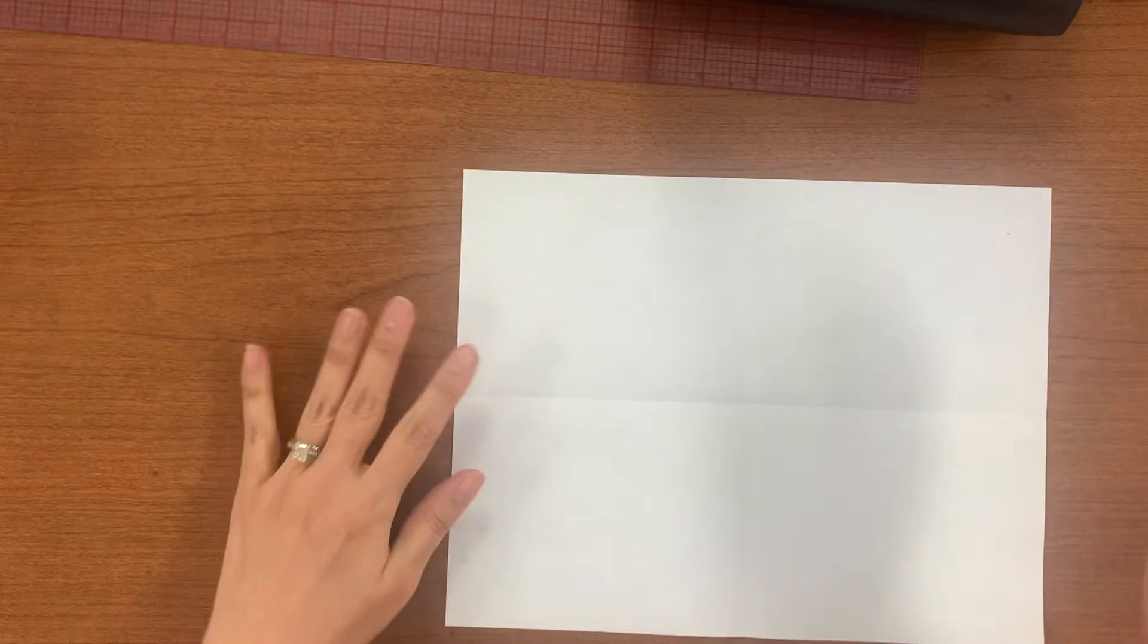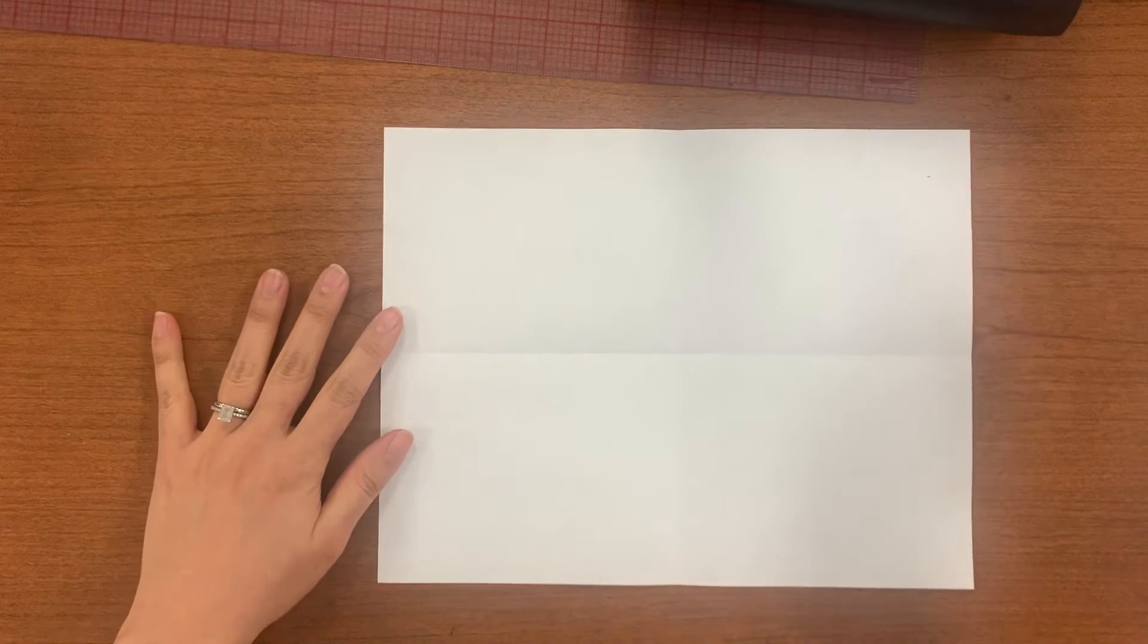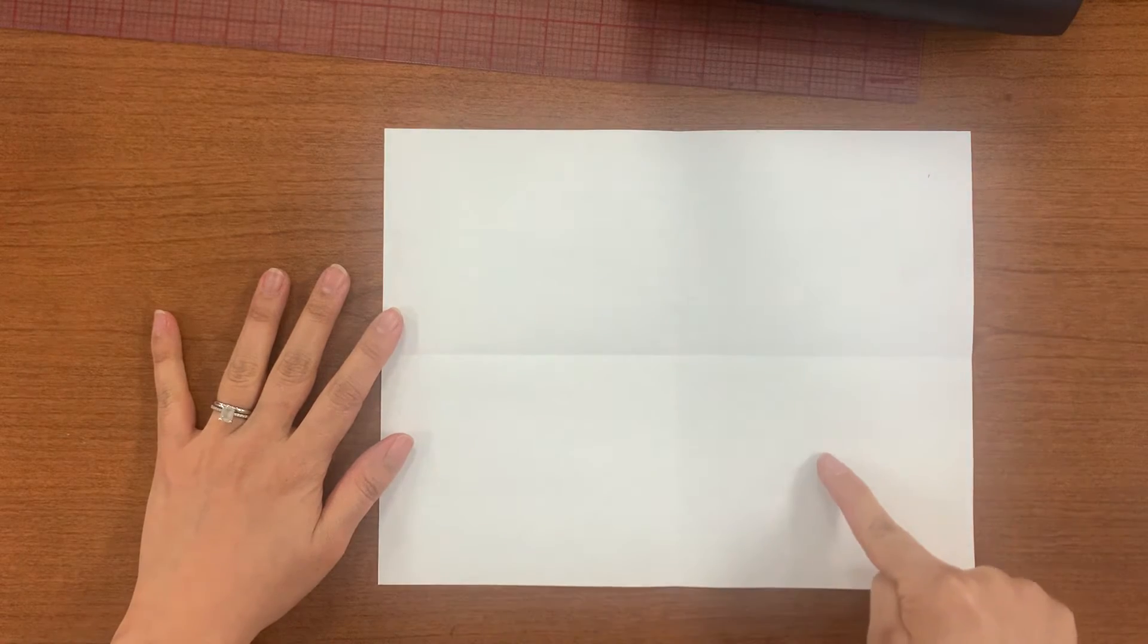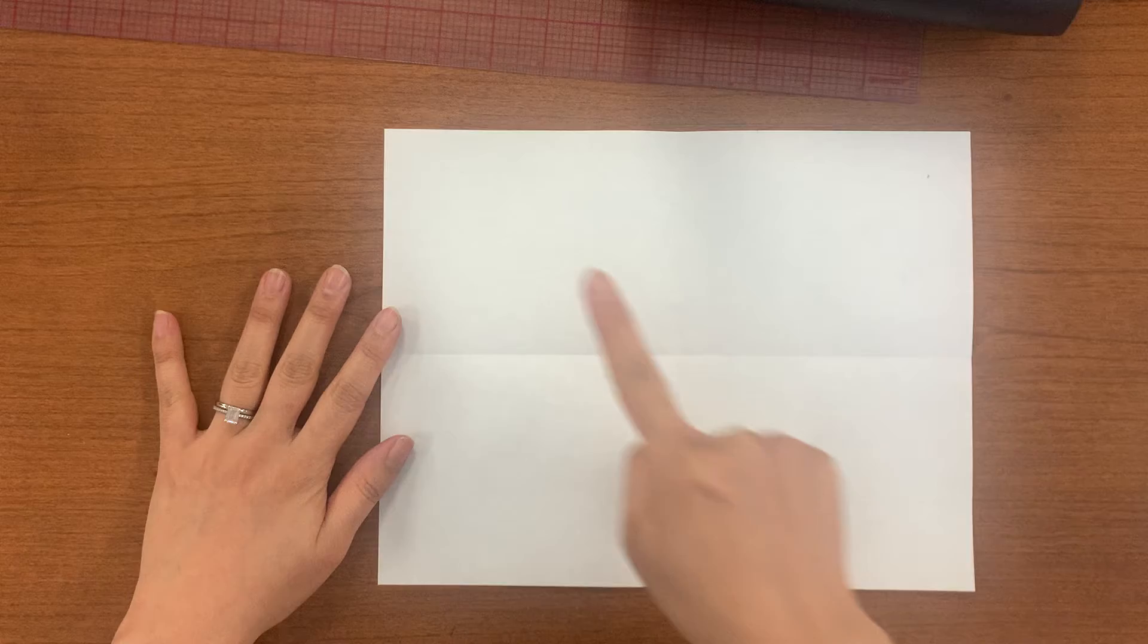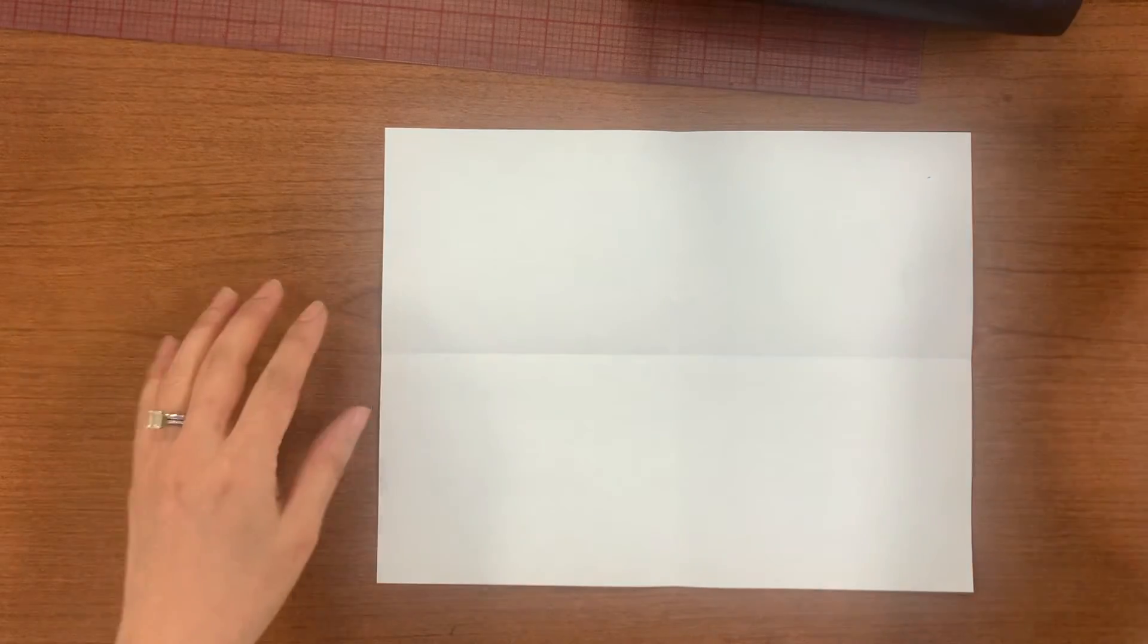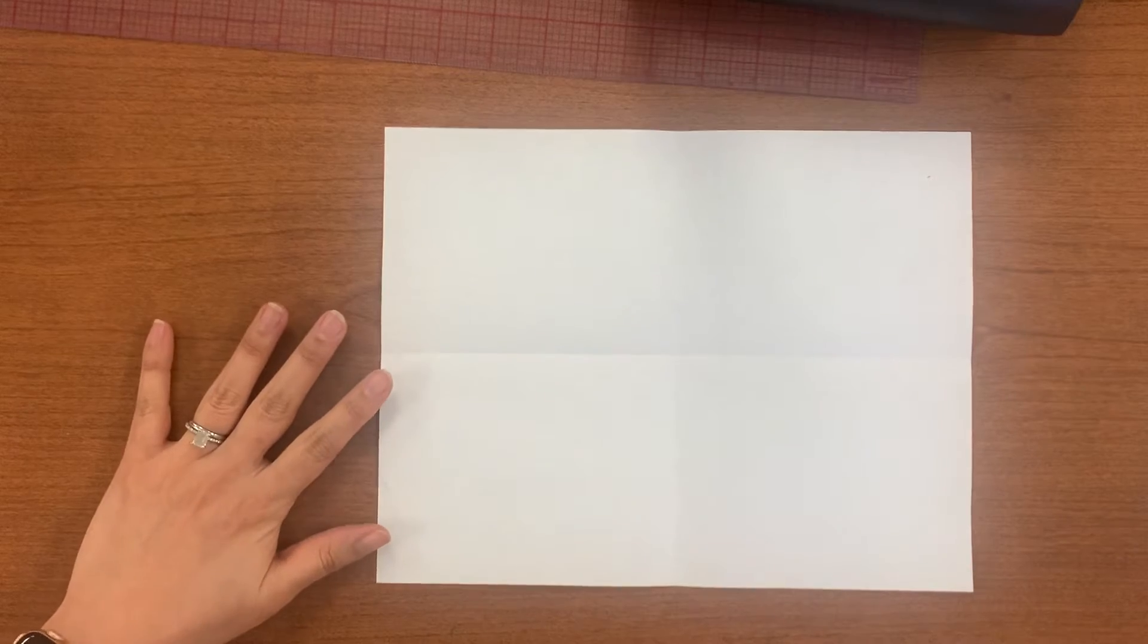But you're going to watch the PowerPoint that I have for you. And you're going to write down four elements of art and definition on all four and give me an example on all four. So let's do one together. Let's do two together. How about that?